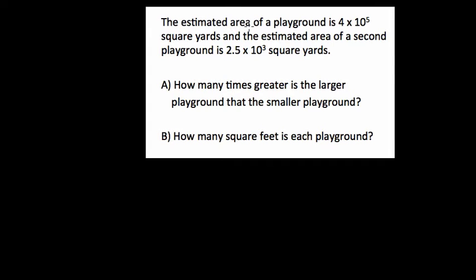In this problem, the estimated area of a playground is 4 times 10 to the 5th square yards. So I'll write that down: 4 times 10 to the 5th square yards, with square yards written as yd². And then the second area of the playground is estimated to be 2.5 times 10 to the 3rd square yards.